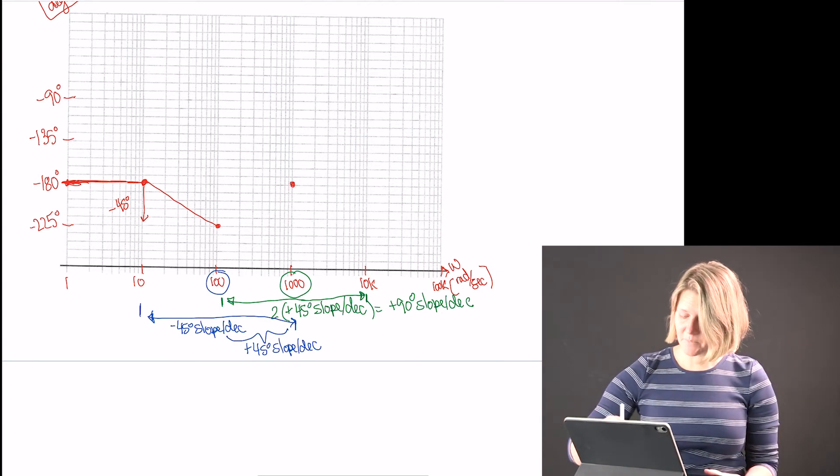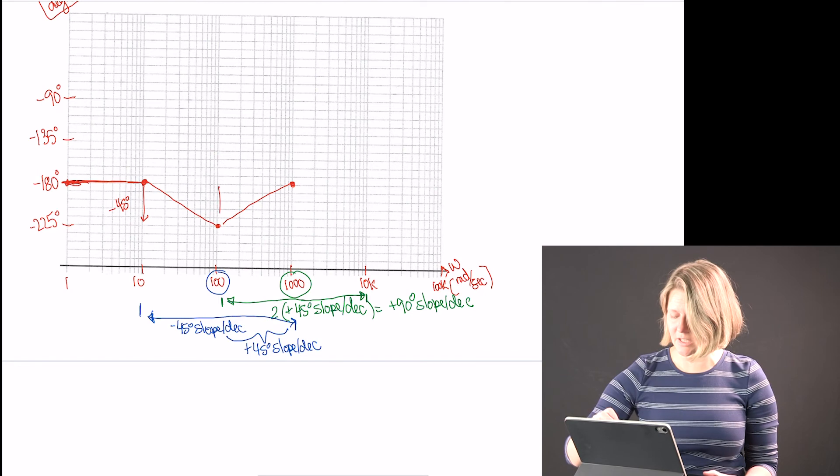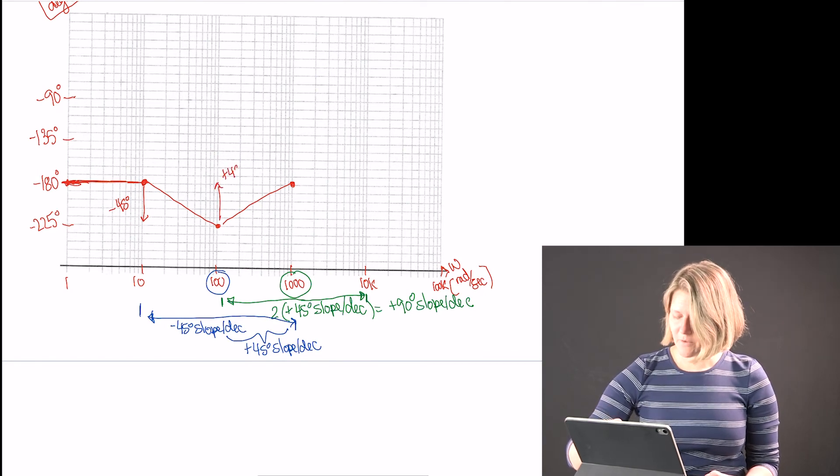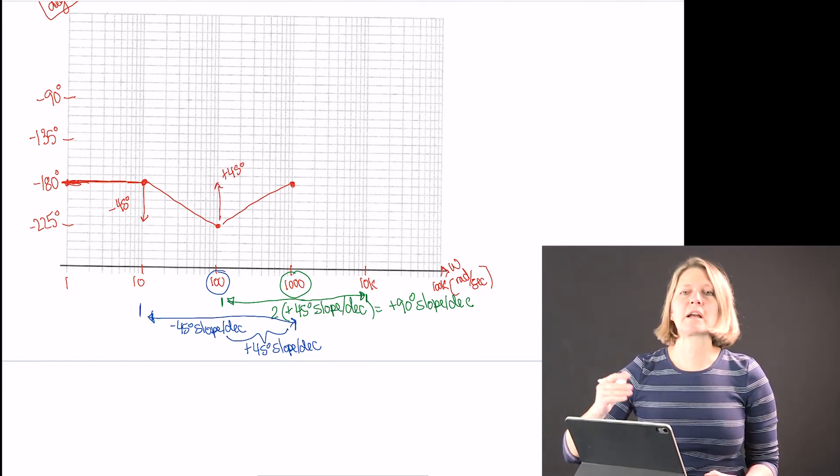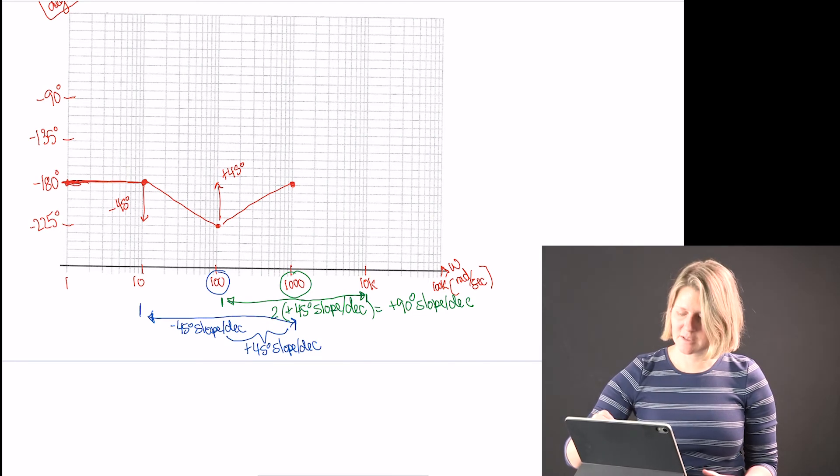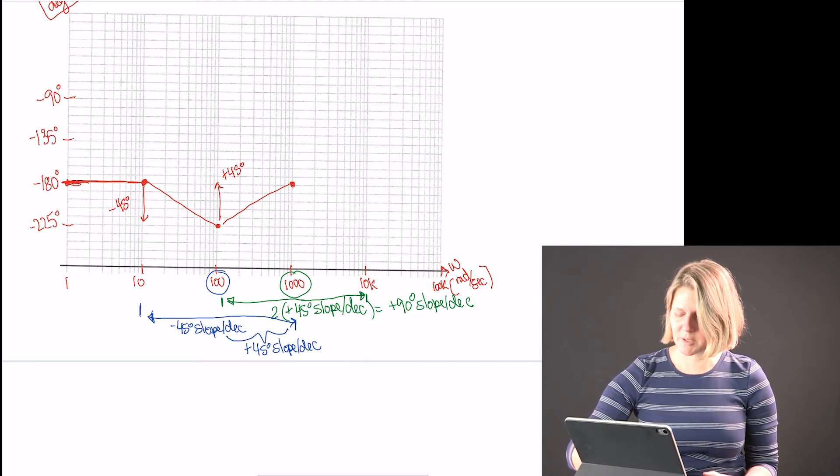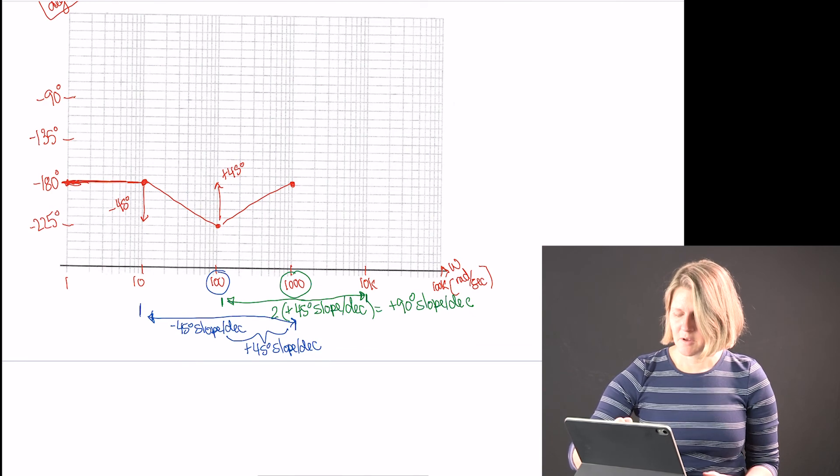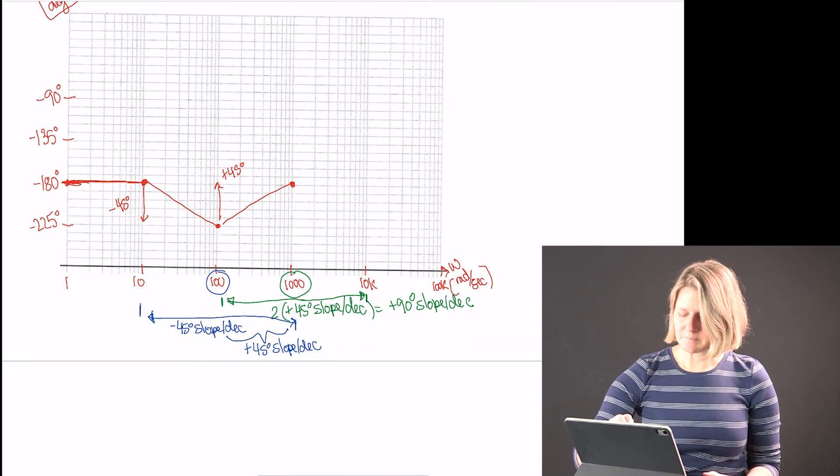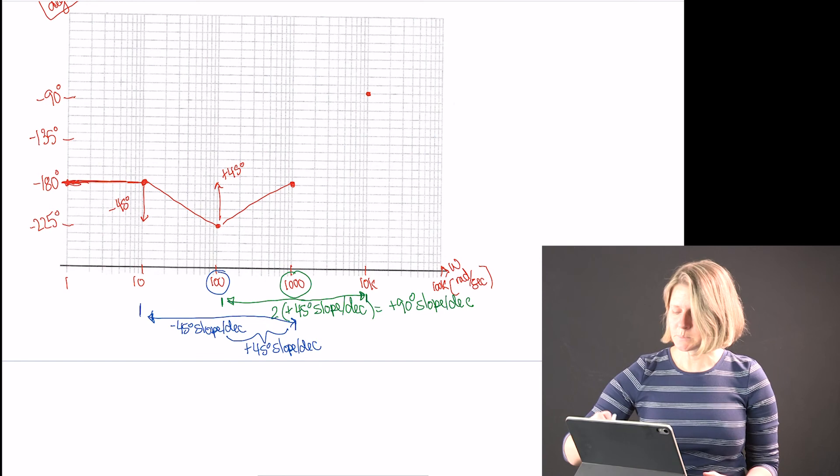And then I have a plus 90 for one more decade. So I go from minus 180 to plus 90 would be minus 90. So I'm going to go all the way up here.